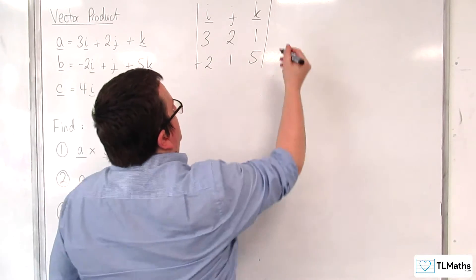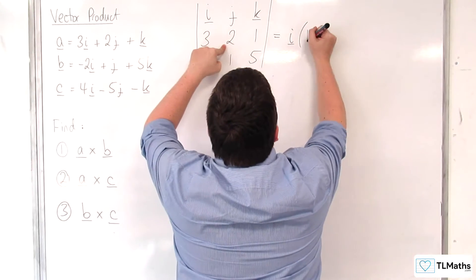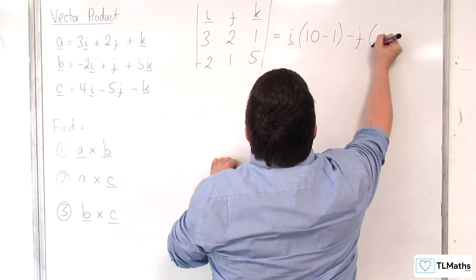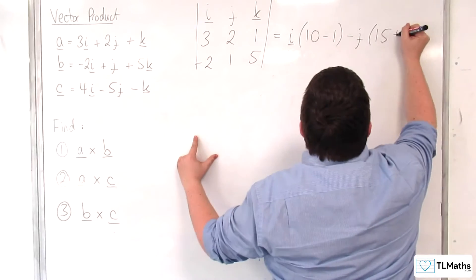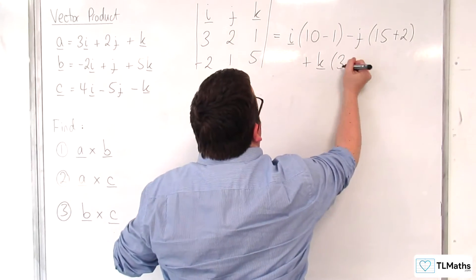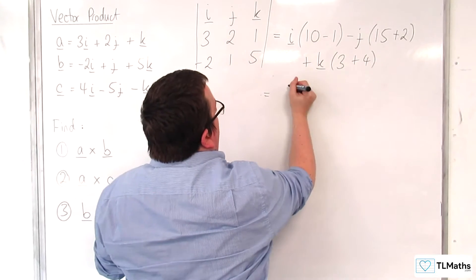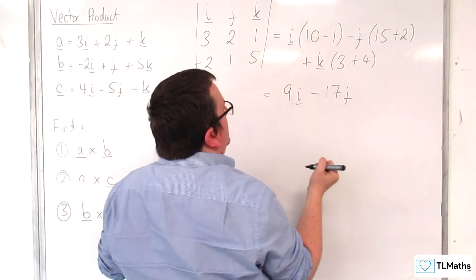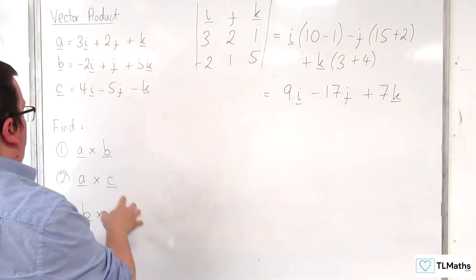And that will be the cross product. So we have for vector I: 2 times 5, take away 1 times 1. Then take away J times 3 times 5, which is 15, take away 1 times minus 2, so plus 2. And then plus K times 3 times 1, take away 2 times minus 2, so plus 4. And so we have 9I, minus 17J, and plus 7K. And so that is A cross B.